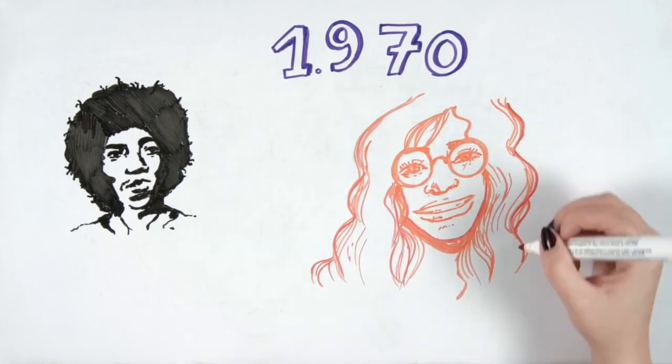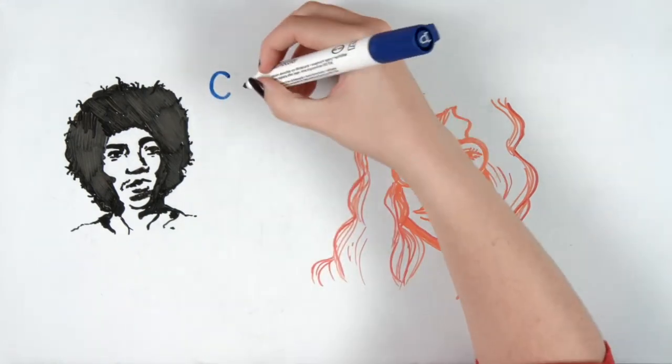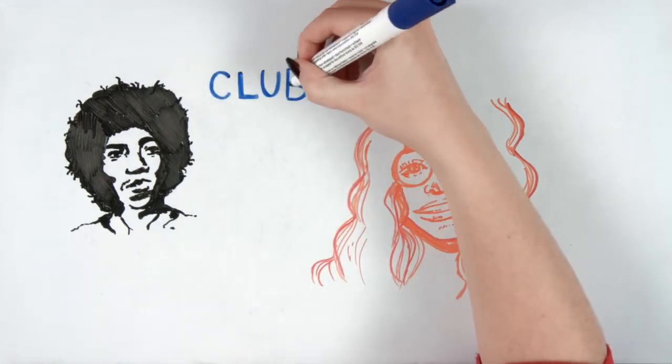Janis Joplin passed away in October. The Piece of My Heart singer was found dead at her Los Angeles hotel. Joplin had settled there to work on what would be her new album Pearl.